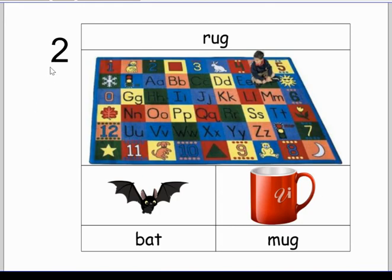So I'm going to read those to you and you write down the word that rhymes in the quadrant. Number two: rug. Which picture rhymes with rug? Is it bat or mug? Rug, bat, rug, mug. Hopefully you draw the picture and write the word that rhymes with rug.